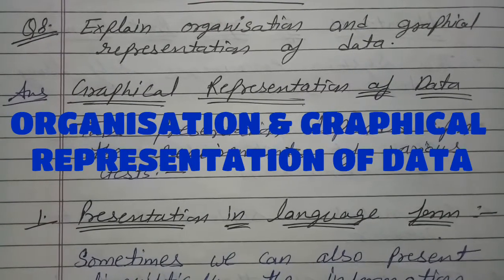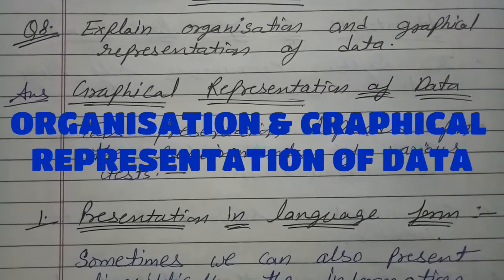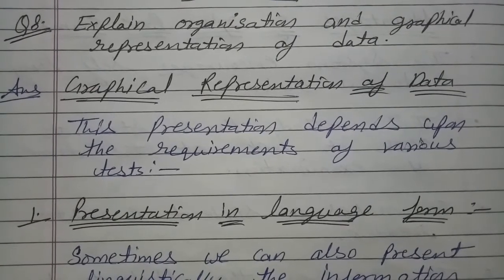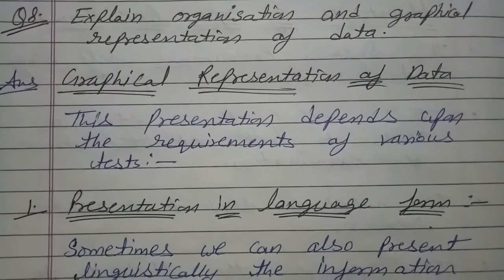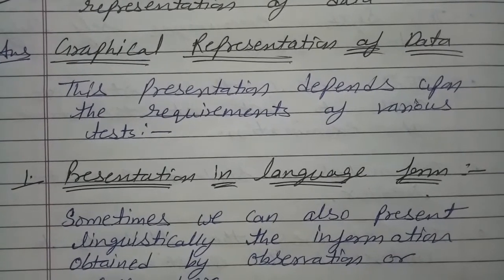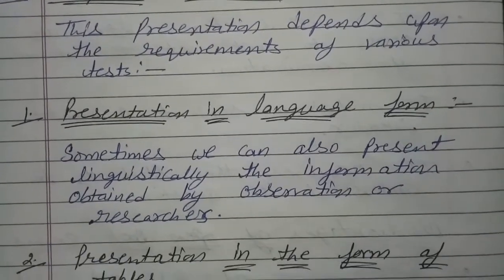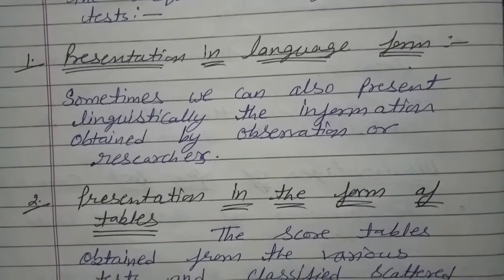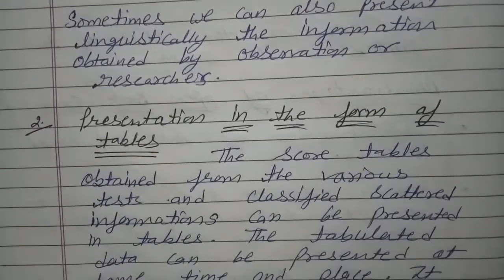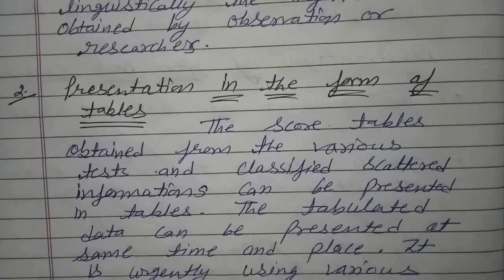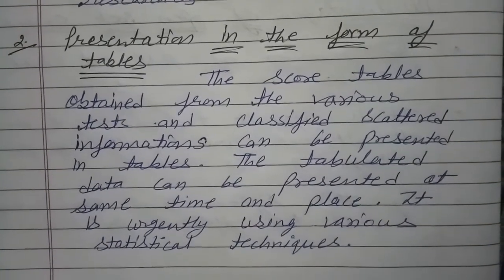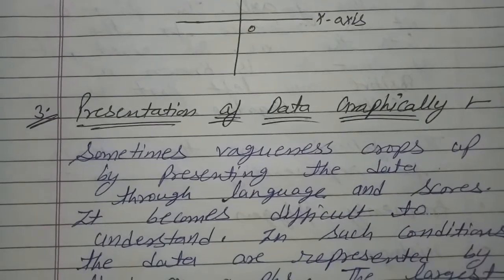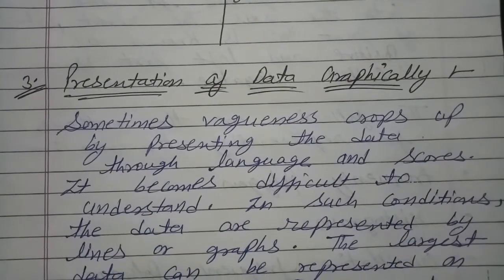2nd year assessment for learning term question: explain organization and graphical representation of data. 1st point: presentation in language form. 2nd point: presentation in the form of tables. 3rd point: presentation of data graphically.